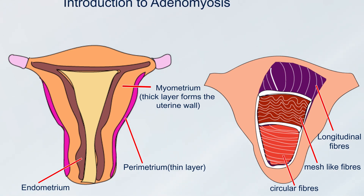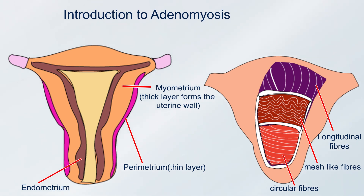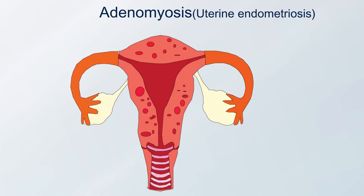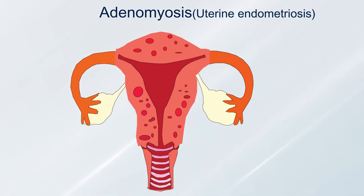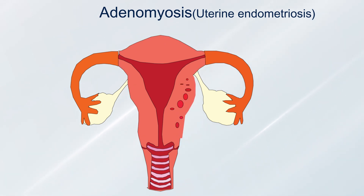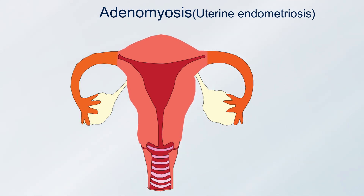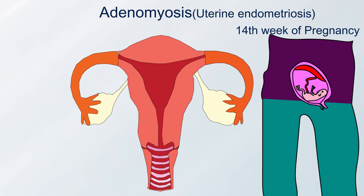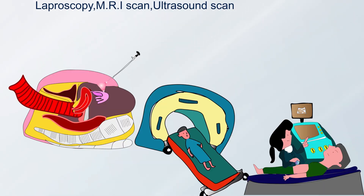In the uterus, the middle layer myometrium forms the uterine wall, which is made up of three layers of muscle tissue: outer longitudinal, middle mesh-like, and inner circular. Adenomyosis is the occurrence of endometrial tissue in the uterine wall or myometrium, otherwise known as uterine endometriosis. When the entire uterine wall is involved, there is symmetrical enlargement of the uterus. The size does not exceed more than that of the uterus at 14 weeks of pregnancy. This enlargement can be identified through laparoscopy, MRI, and ultrasound.